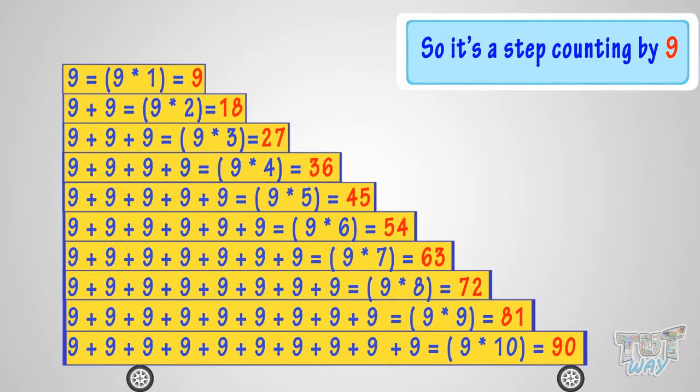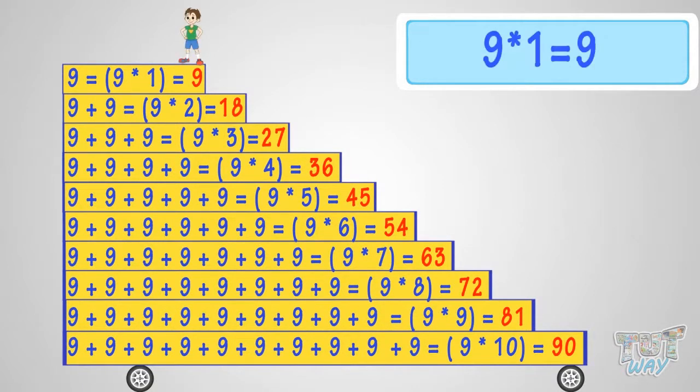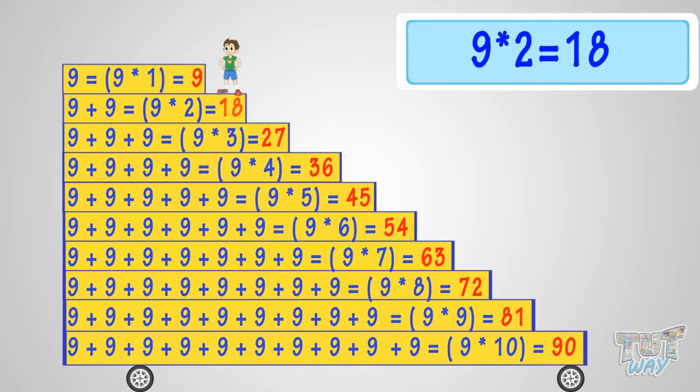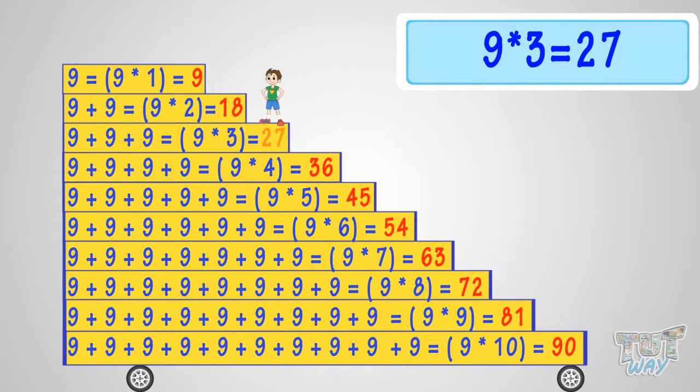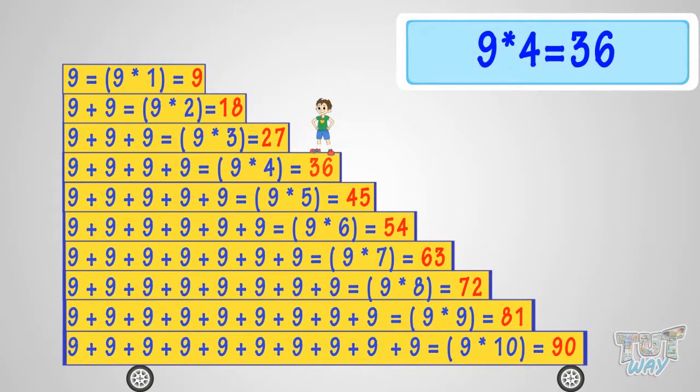Let's revise what we learned. 9 times 1 is 9, 9 times 2 is 18, 9 times 3 is 27, 9 times 4 is 36, 9 times 5 is 45.